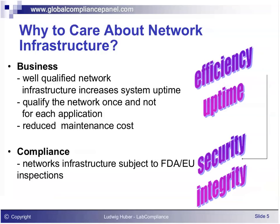This slide gives some reasons why network infrastructure should be qualified. We talk about qualification here, not validation. There are two types of reasons: business reasons and compliance reasons. The business reason is important because if you have good control over the network, the failure rate is reduced, and if there is a problem, it is much easier to diagnose when everything is well documented and controlled. You can easily find where individual network devices are located and how they are connected, and which firmware is installed on which device — this greatly helps when calling a help desk. Also, networks typically support multiple applications.